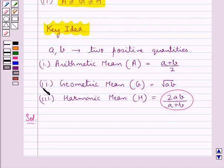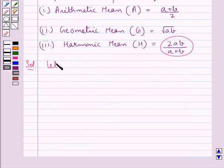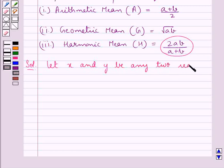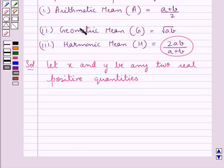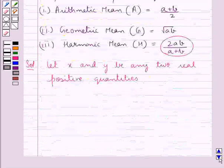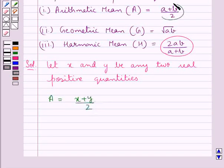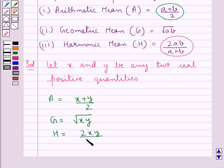This is the key idea that we use in this question. Let's now move on to the solution. Let X and Y be any two real positive quantities. Then A, the arithmetic mean, is equal to (X + Y) / 2; G, the geometric mean, is equal to the square root of XY; and H, the harmonic mean, is equal to 2XY / (X + Y).